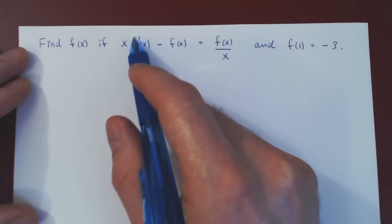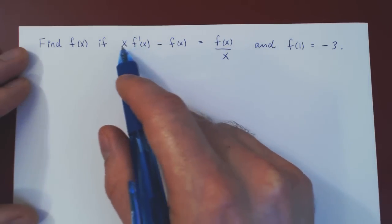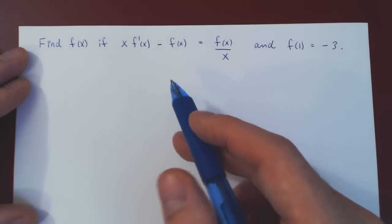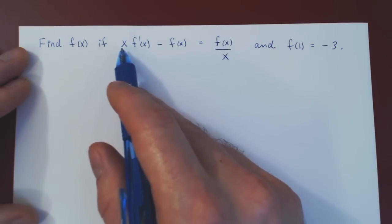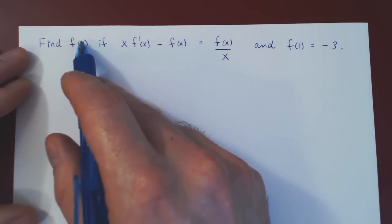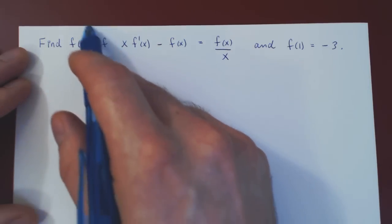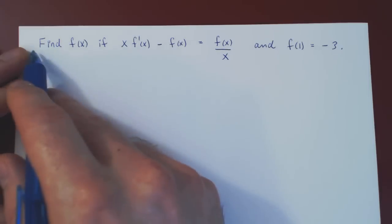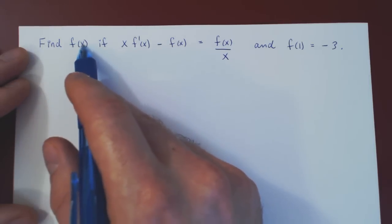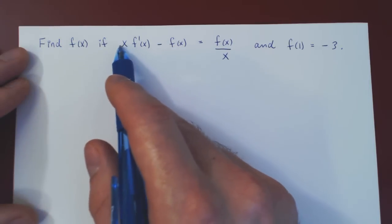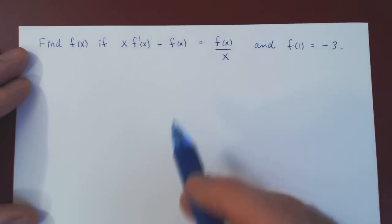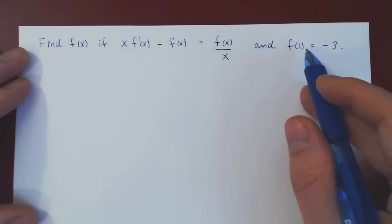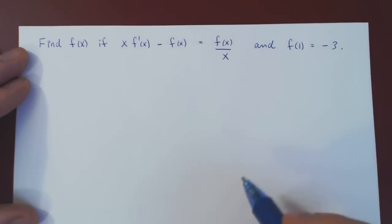Here we only have the first derivative of f, but the equation could also contain higher derivatives. Given this equation, we're trying to solve for f of x, the unknown function. We want to find the function f that satisfies this differential equation, and we're given an initial condition: f of 1 is equal to negative 3.